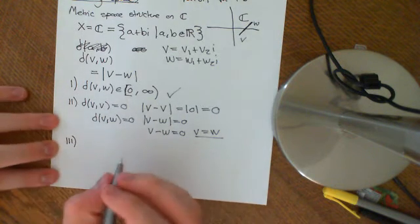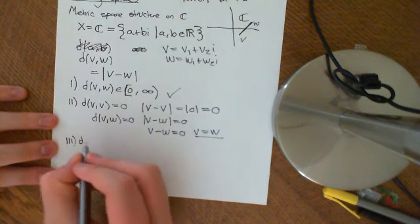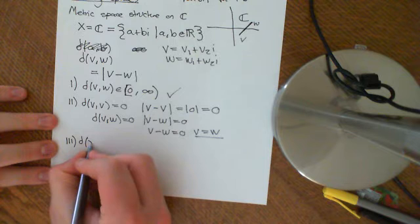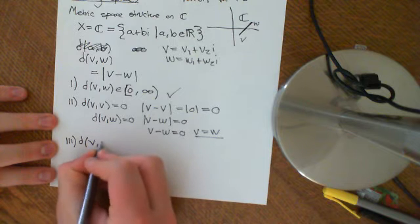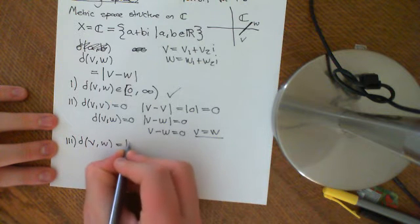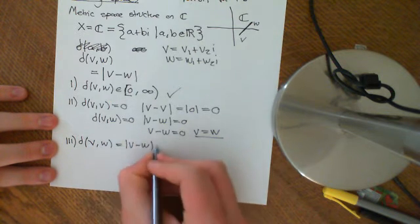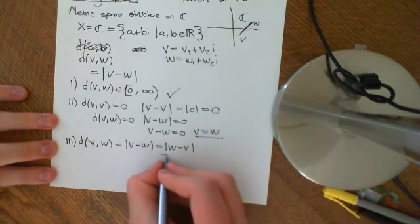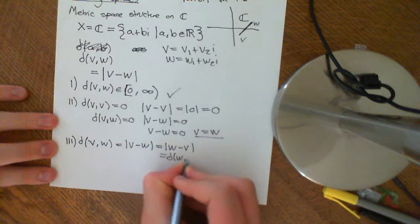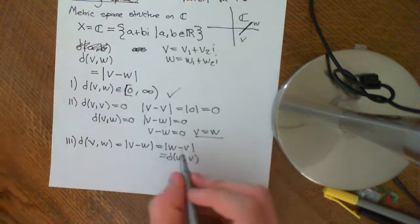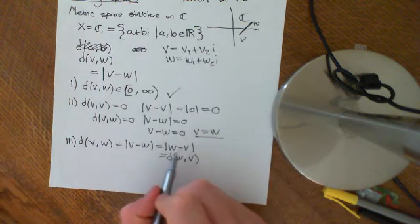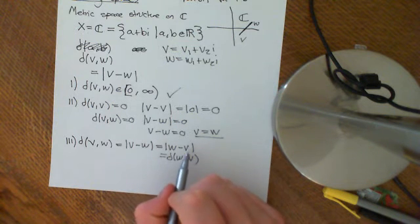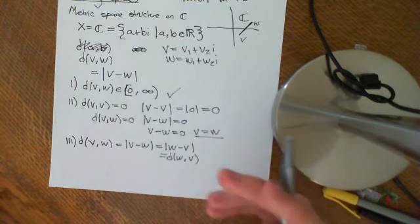The third property is symmetry: D(V, W) = |V − W| = |W − V| = D(W, V). This holds because W minus V is the negative of V minus W, but taking the modulus doesn't affect it.